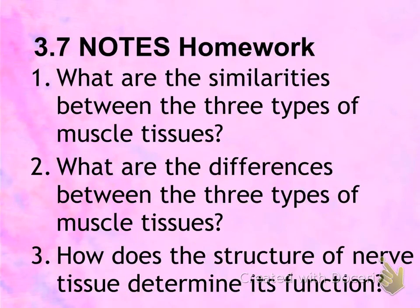The 3.7 homework assignment: Number one, what are the similarities between the three types of muscle tissue? Number two, what are the differences between the three types of muscle tissue? Number three, how does the structure of nerve tissue determine its function?